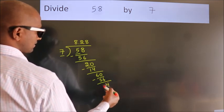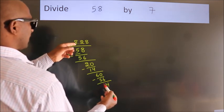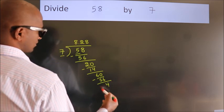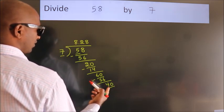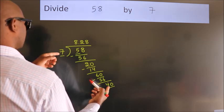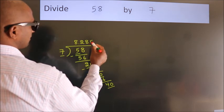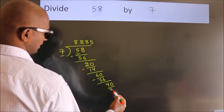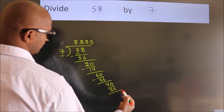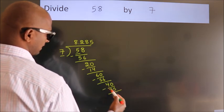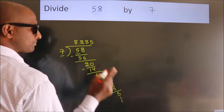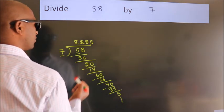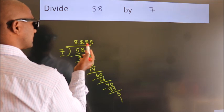After this, we already have the decimal, so directly take 0. So, 40. A number close to 40 in the 7 table is 7 times 5, which is 35. Now we subtract and get 5. The division continues. It is enough if we do up to 3 decimal places.